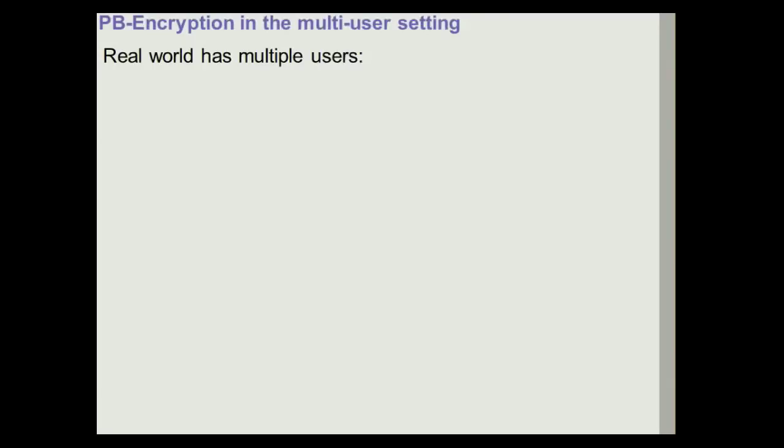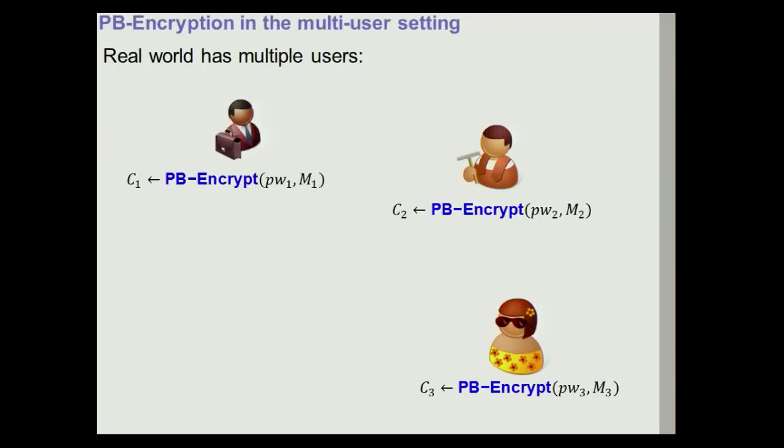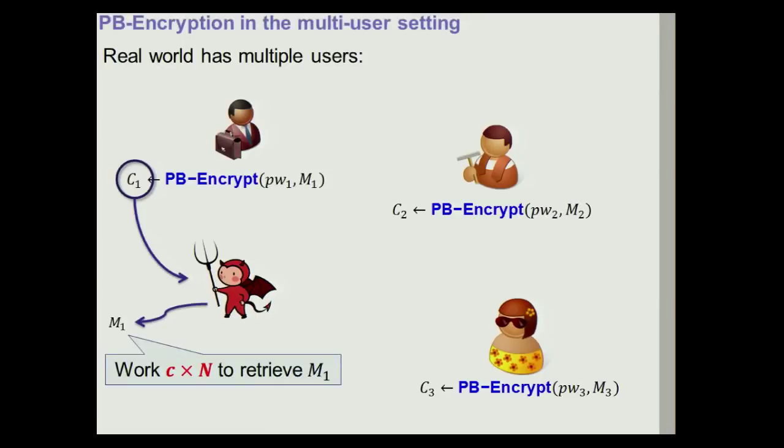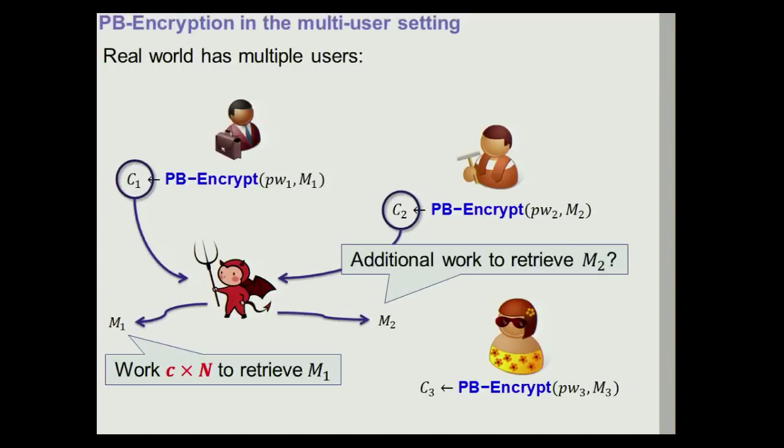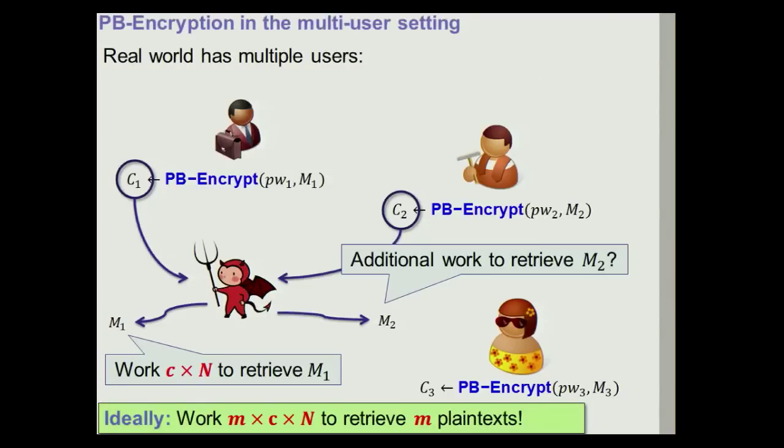The point that we want to make is that there are other things that we would like to expect from a good key derivation function and a password-based encryption scheme. In particular, we want to look at the multi-user setting, where there are many users, each one using their own passwords to encrypt files. What we've just seen is only the fact that if you have an attacker, and the attacker wants to retrieve some message that has been encrypted by user 1 from a corresponding ciphertext C1, then you can do that in work c times N, and we might not be happy because c times N is just too small. But what we want to ask is the question, what happens now if the adversary wants to retrieve a message from a second ciphertext belonging to another user? How much work does the adversary need to do, how much additional work?